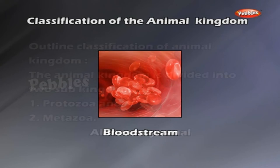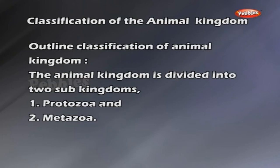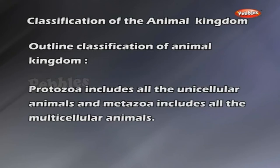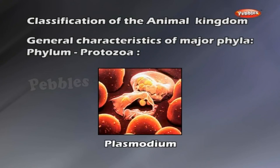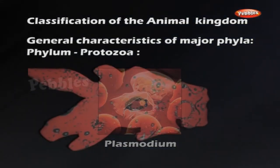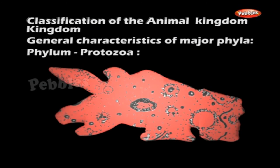Intracellular parasites live inside the cell — example: Plasmodium. Outline classification of the animal kingdom: the animal kingdom is divided into two sub-kingdoms, Protozoa and Metazoa. Protozoa includes all the unicellular animals and Metazoa includes all the multicellular animals. Phylum Protozoa — examples: Amoeba, Paramecium, Plasmodium. This phylum includes unicellular microscopic organisms. Their locomotion is with the help of pseudopodia, cilia or a flagellum. The nutrition is either autotrophic or heterotrophic. They reproduce either sexually or by asexual methods.